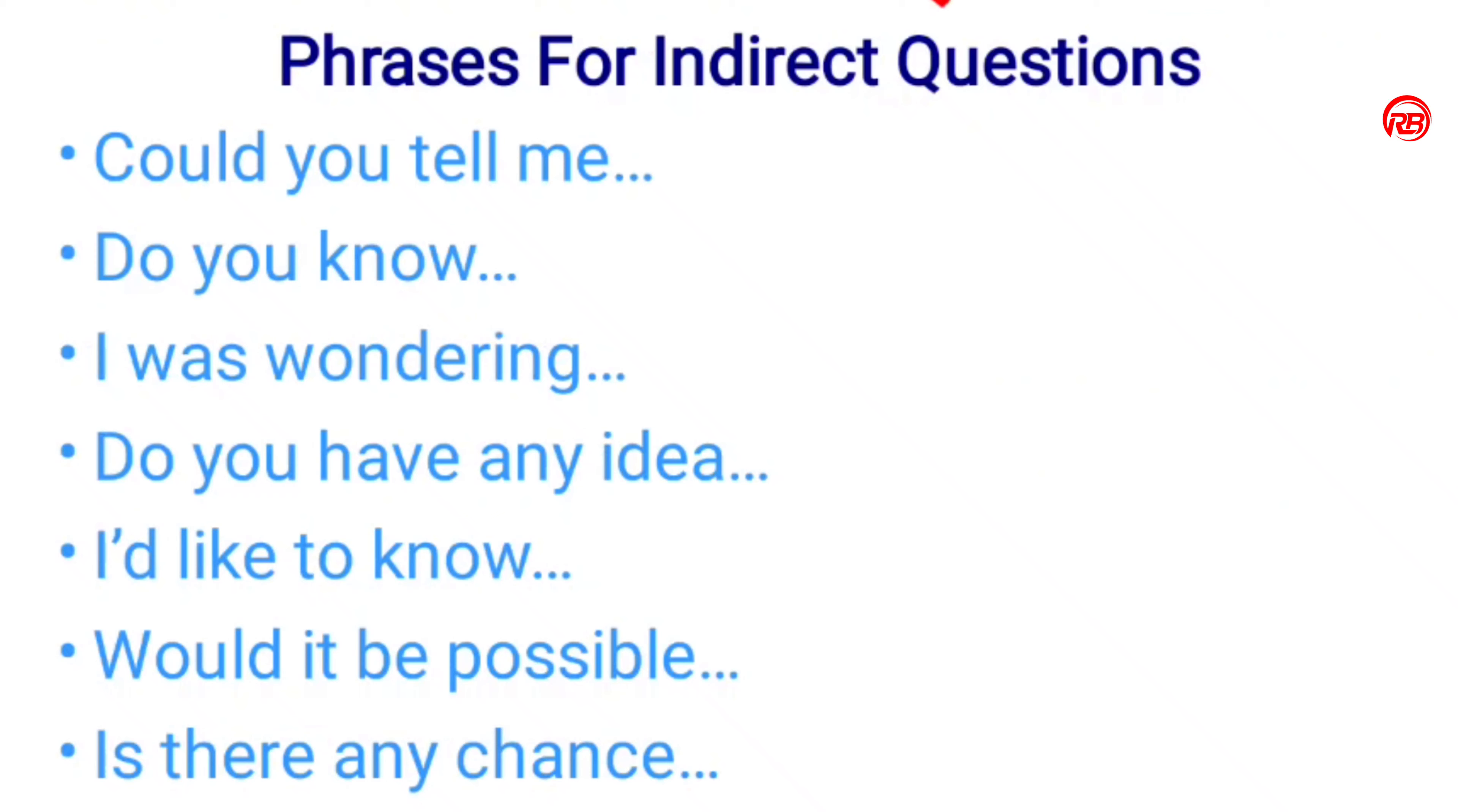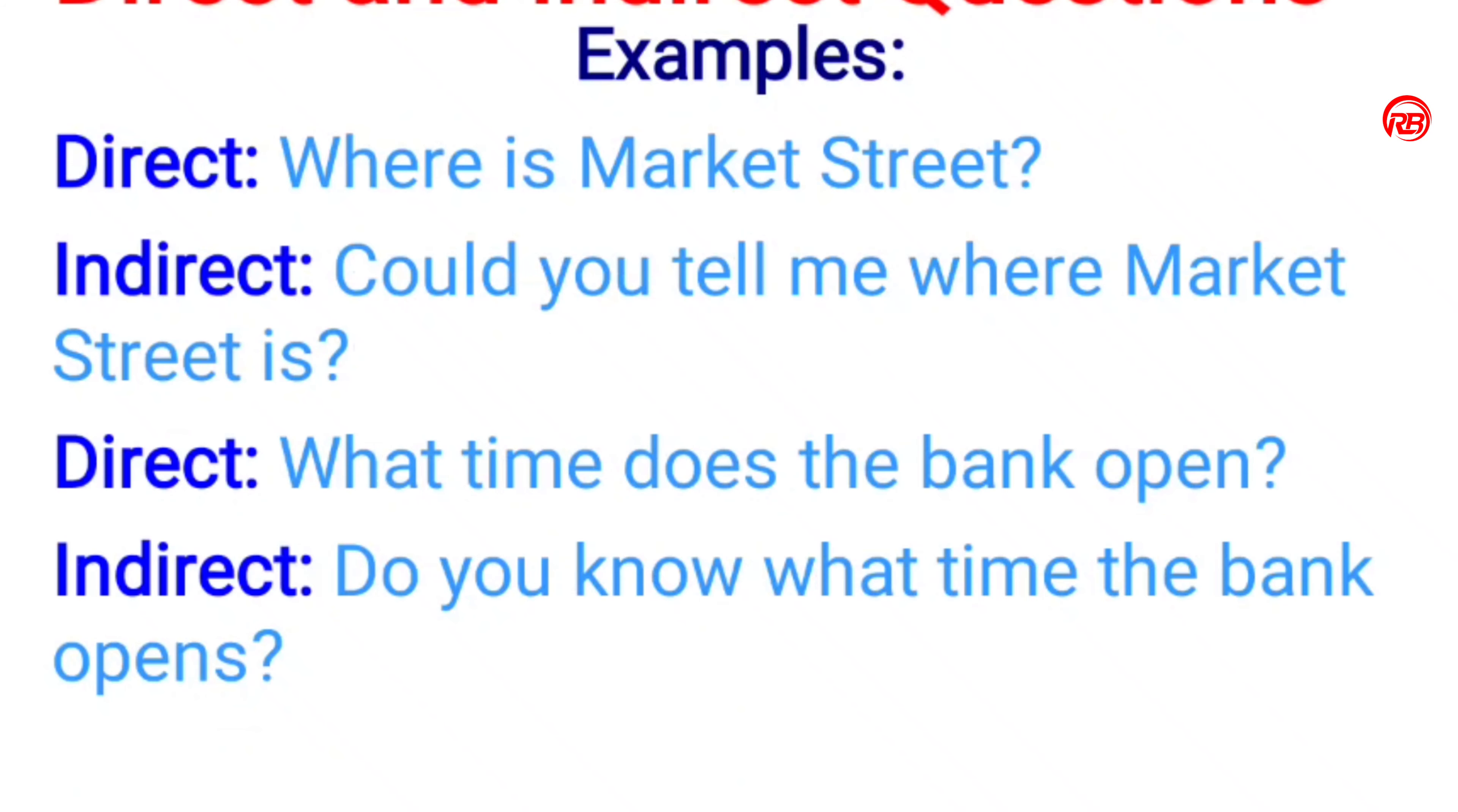And here I have given you a few phrases for indirect questions. Just go through it. These kind of phrases we can use for indirect questions: Could you tell me, do you know, I was wondering, do you have any idea, I would like to know, would it be possible, is there any chance? And again I have given you a few examples for better understanding the concept of direct and indirect questions.